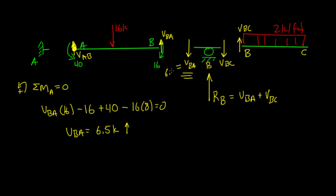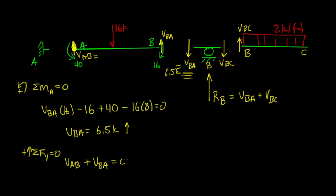Now let's find V_AB. Summing forces in the y-direction on member AB equals zero, with up as positive: V_AB plus V_BA minus 16 equals zero. Since V_BA is 6.5 kips, solving gives V_AB equals 9.5 kips.